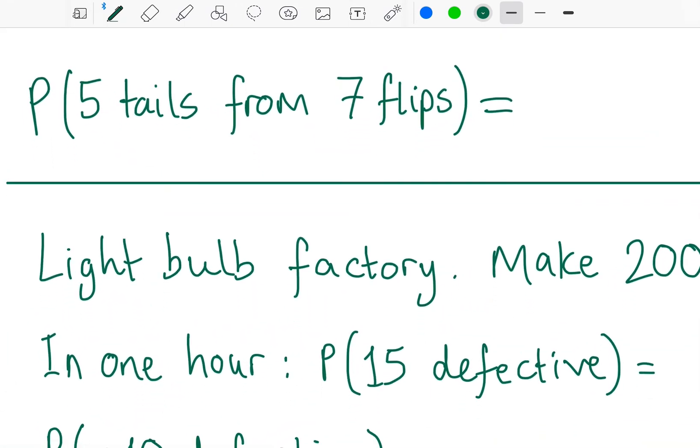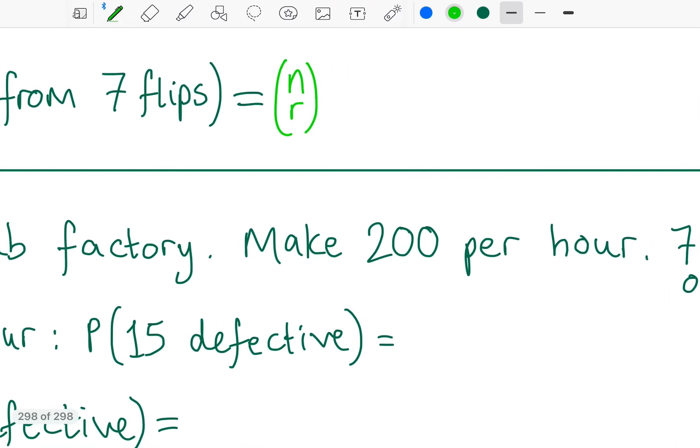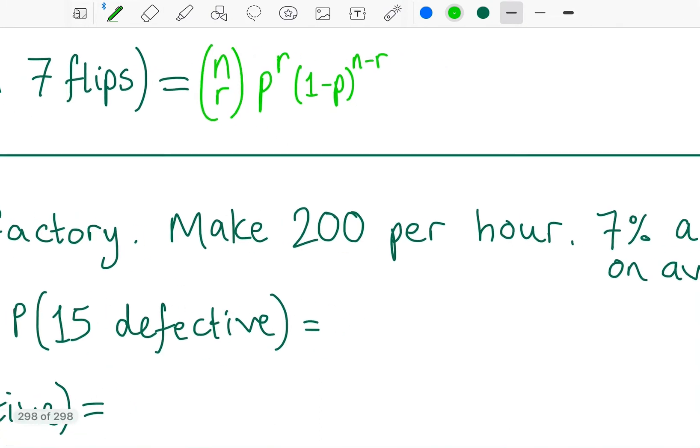Now, what if we wanted five tails from seven flips? Hopefully, we get the picture now, and I can even write out a formula. n choose r, that's going to be my number of trials, n. And r is going to be my number of tails in this case. I'm going to have the probability of getting a tail to the power of r, because I want it r times, and the probability of getting a head, which is one minus the probability of getting a tail. And I'm going to need n minus r of those. Just like binomial expansion, the two exponents add up to n.